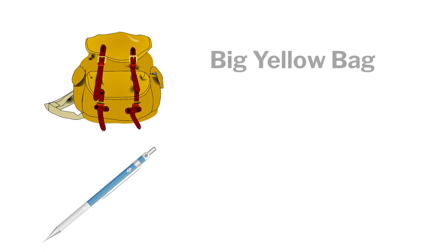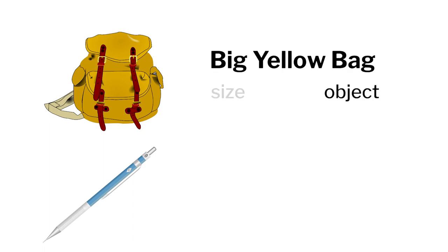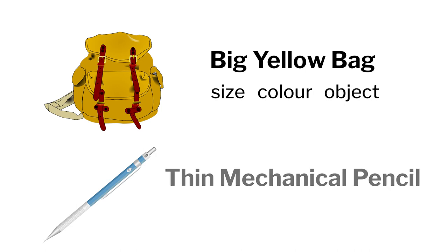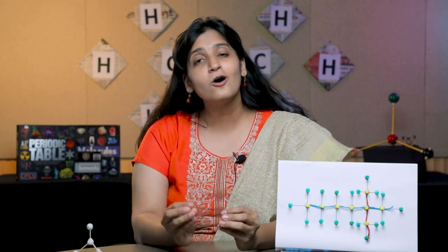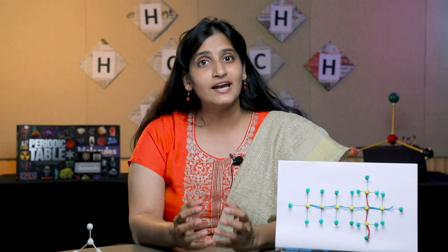For example, 'the big yellow bag' is based on object, size and colour, or 'the thin mechanical pencil' is based on size, object and its type. Students should use the same set of rules to rename every object in the bag. Later, they explained their set of rules to the class. We even made it fun by asking everyone to guess the object they are referring to using the criteria they have created. This activity made the students appreciate the importance of nomenclature and how a simple set of rules allows us to name over a million compounds.